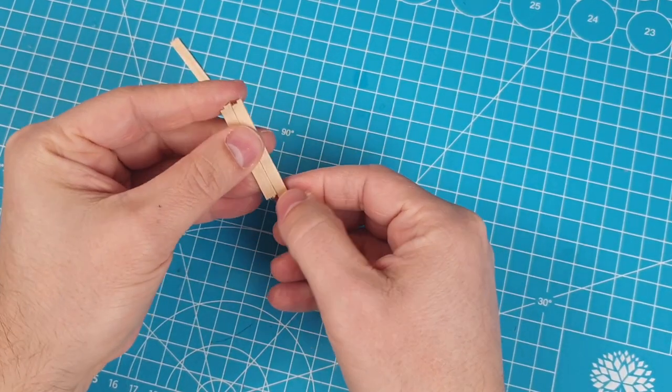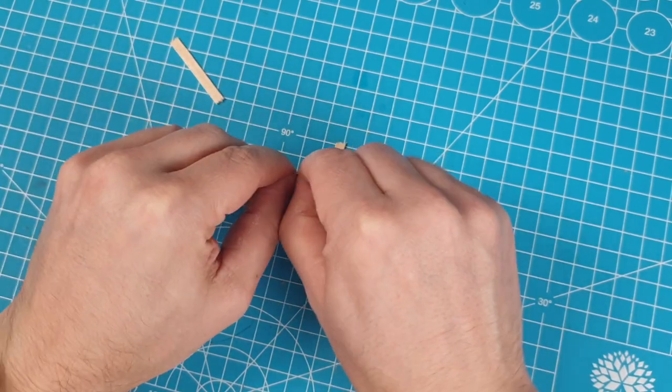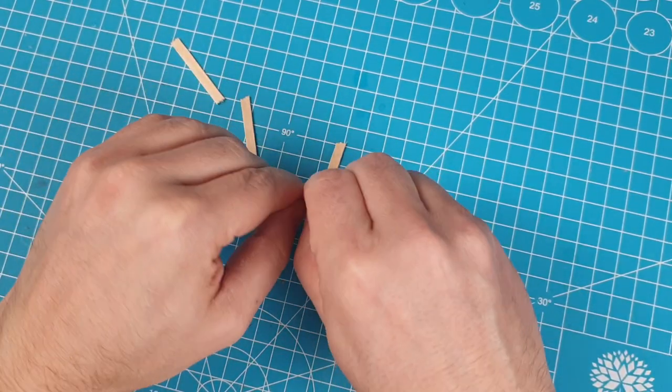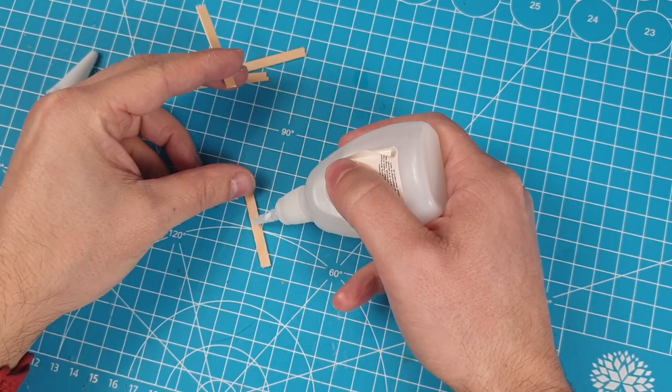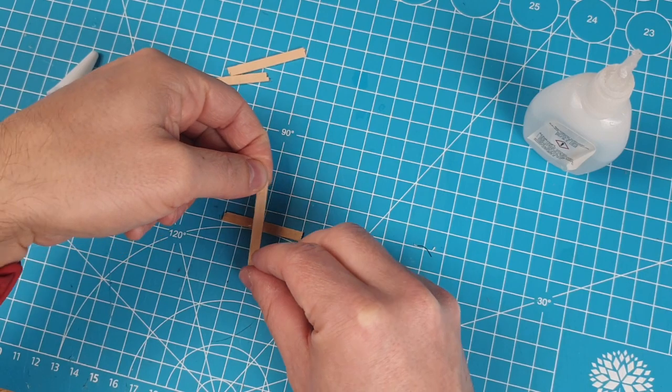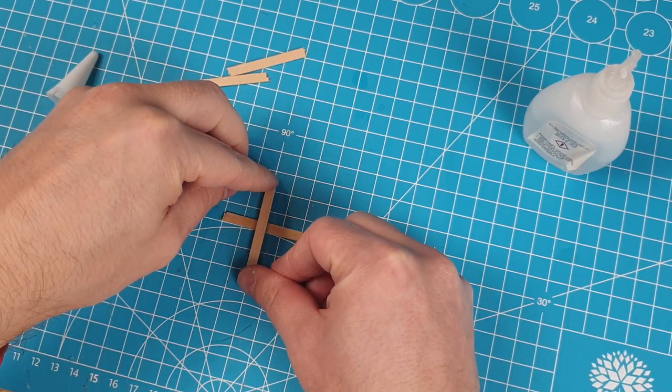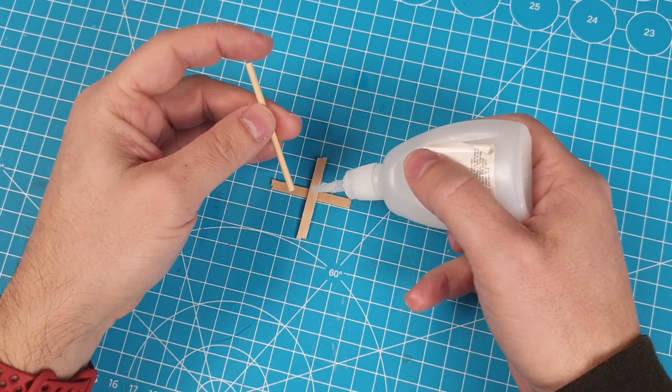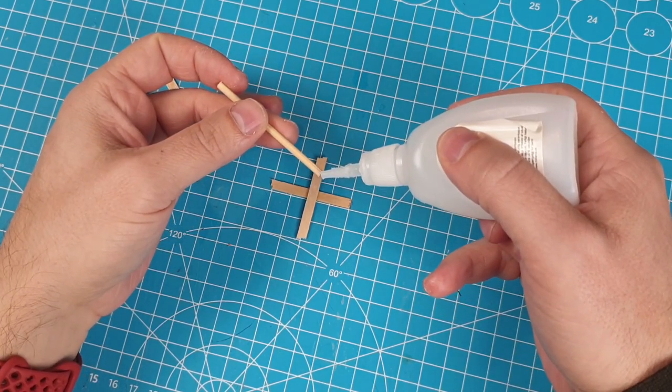I'm going to make a wooden stand to hold the wire in place. First, I break off four 4cm pieces of coffee stirrer. Then I glue two of them together at a 90 degree angle, which leaves me with two crosses. I cut off a fitting length of a wooden skewer for a connecting piece, and then I glue it to the center of one of the crosses.